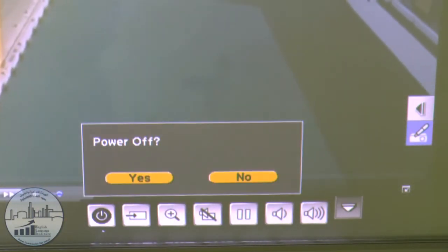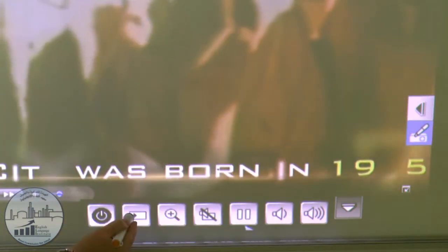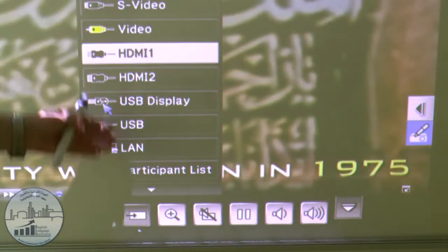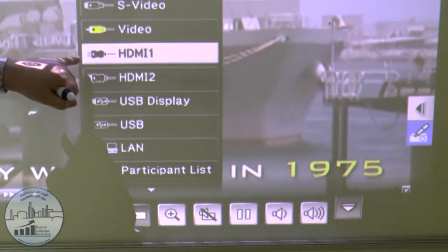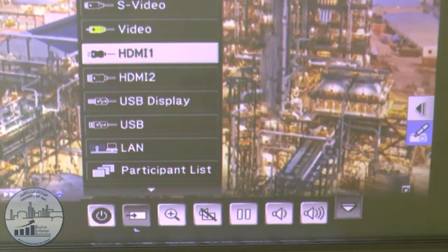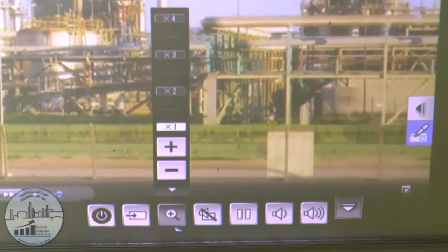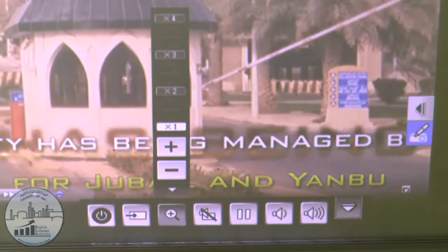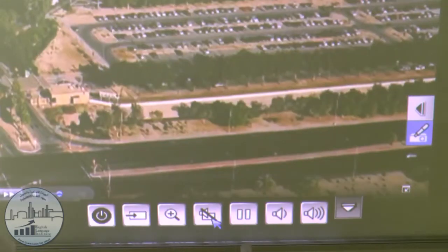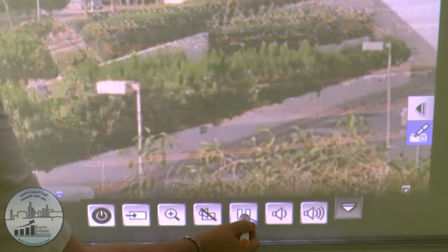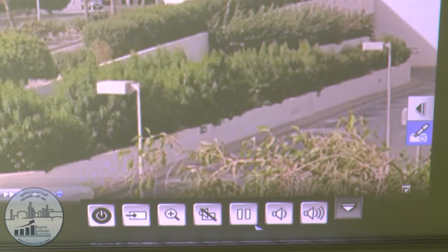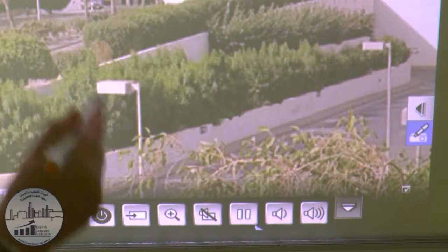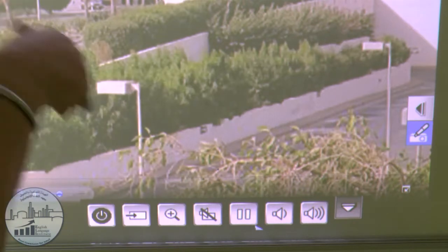We have power off. This will change your sources: computer, S-Video, video, two HDMI's, USB display. This will increase the magnification of your image if you want it bigger. This gets rid of the whole picture. This pauses the picture. It doesn't pause the sound, but it pauses the picture. If you want to pause the sound, you need to go back to the laptop and pause it there.